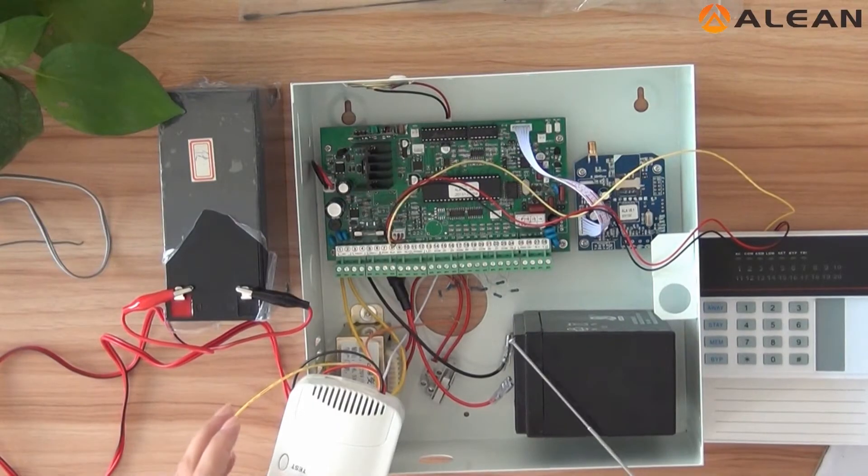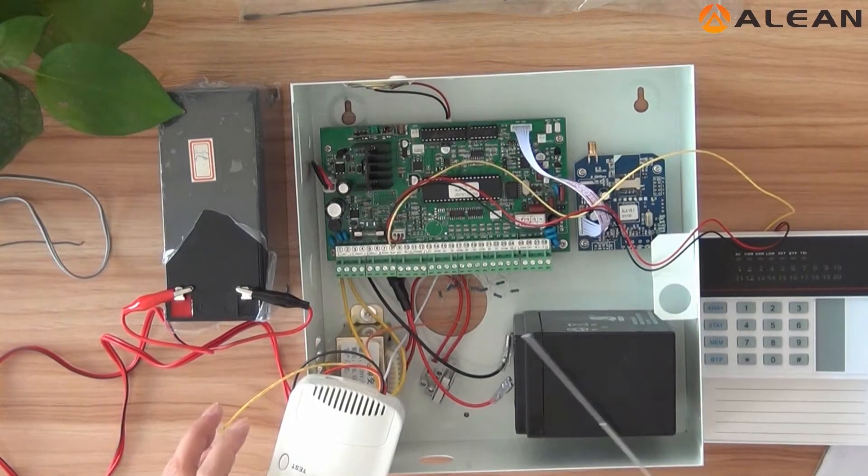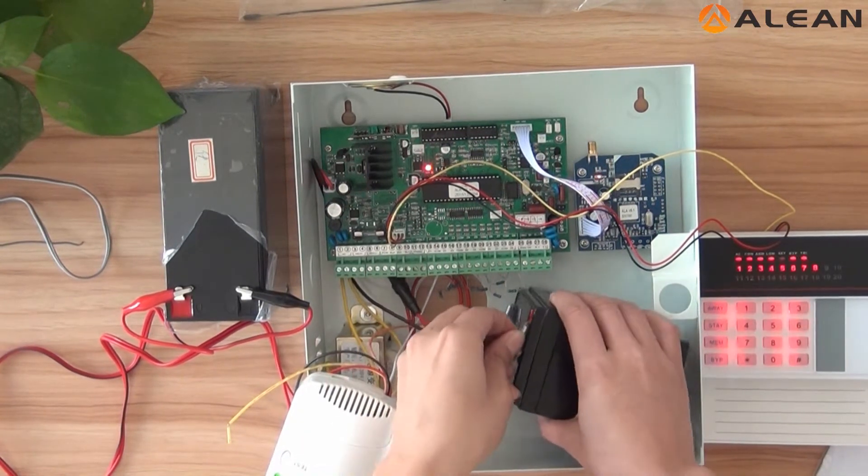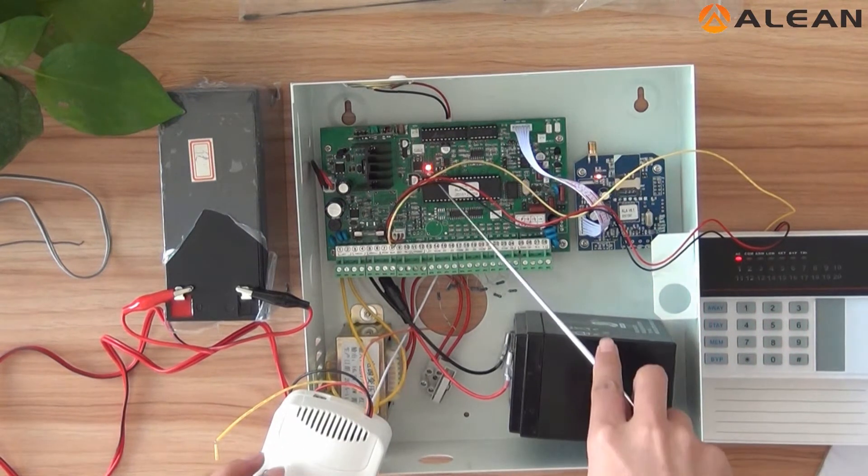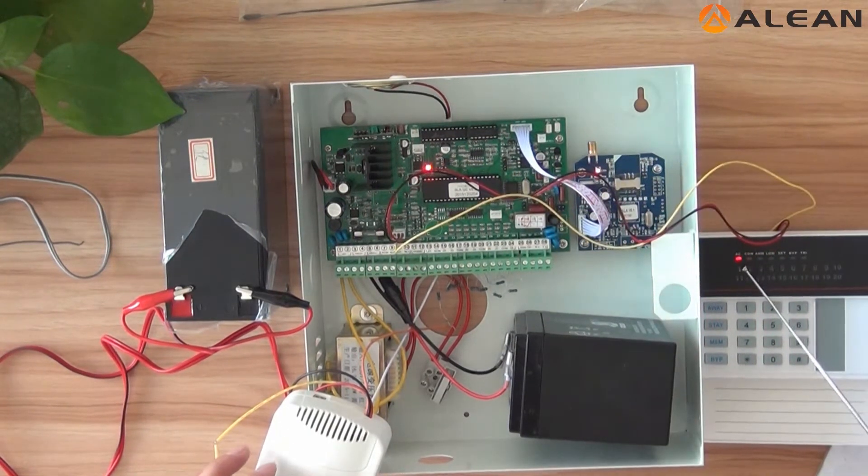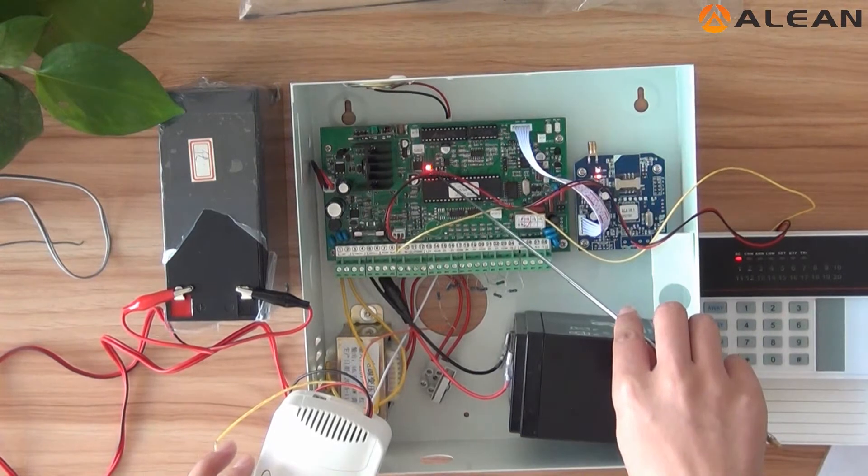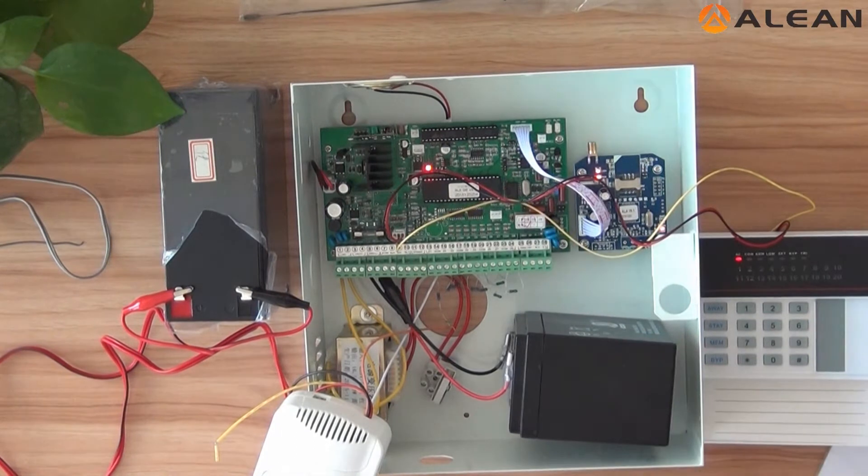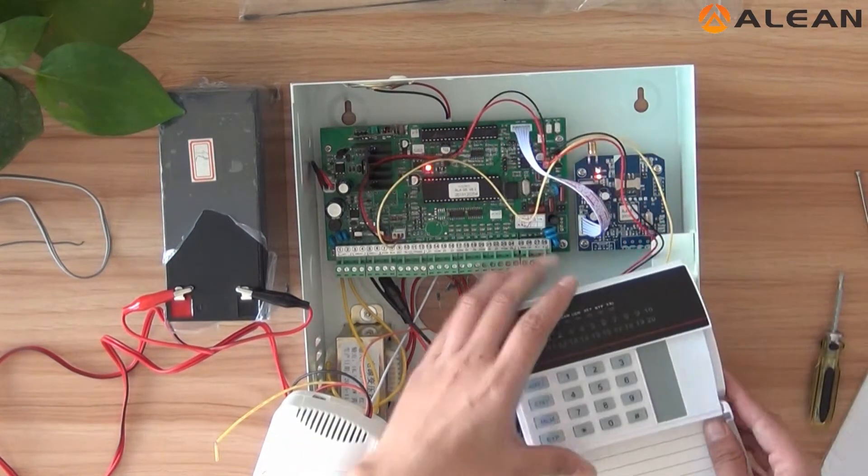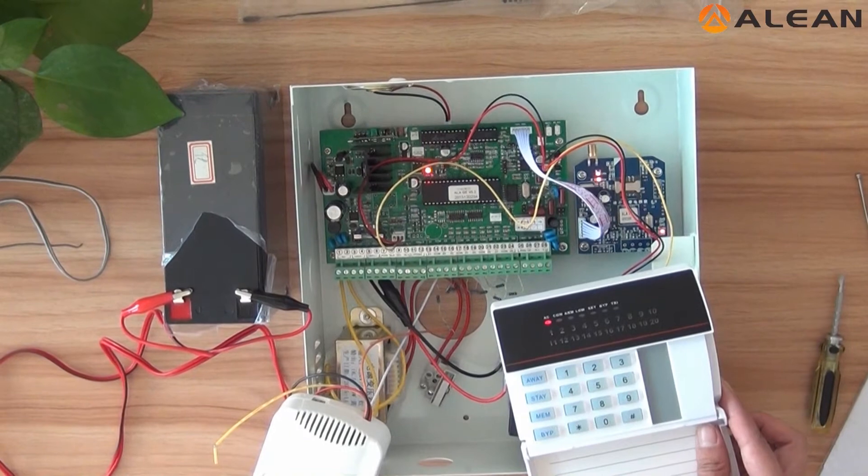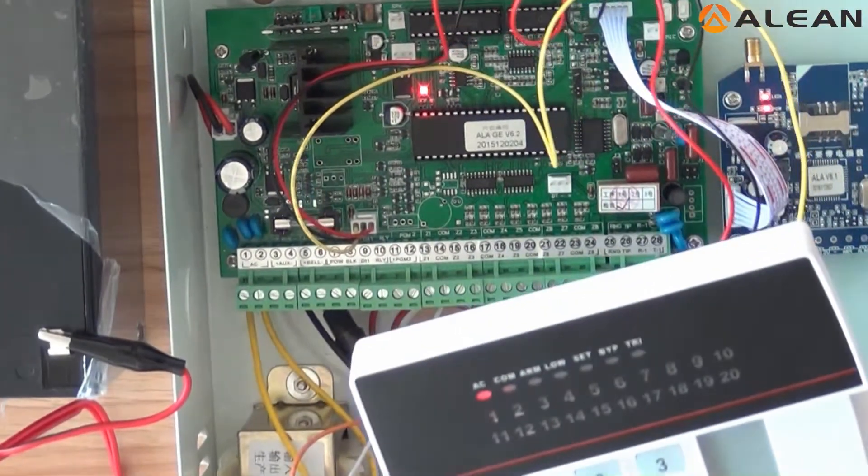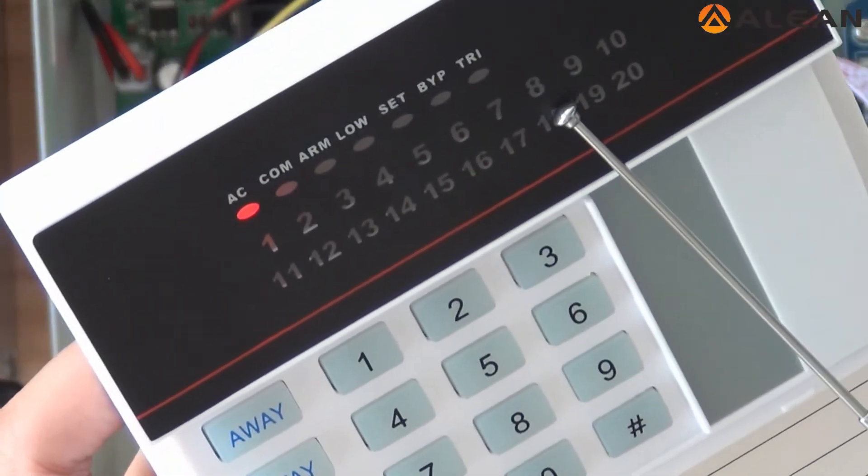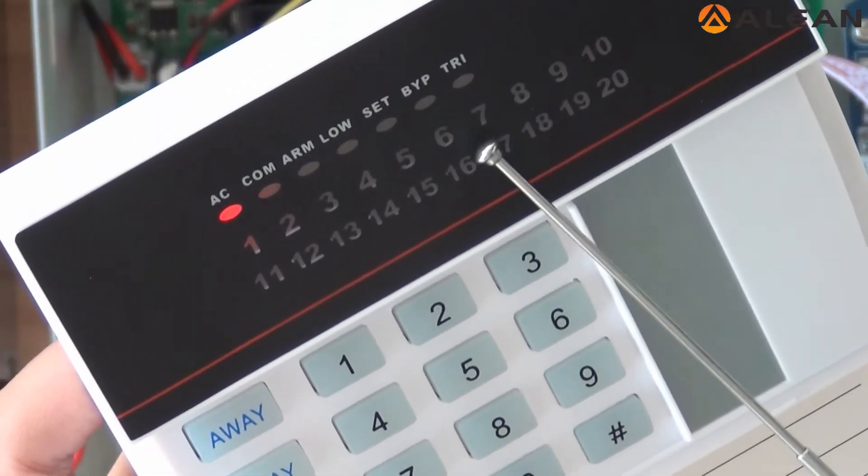Now, let us power on for the alarm control panel and the keypad again. We see the indicator. The LED light is flashing. We see before the 8-Zoom is flashing. Now it is off.